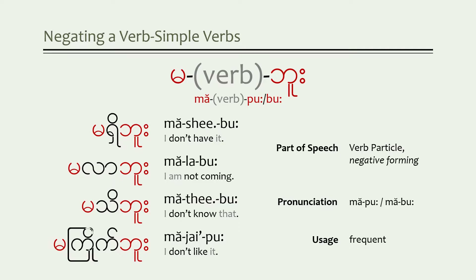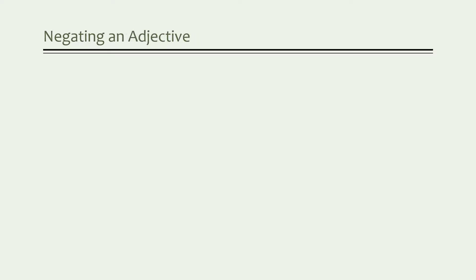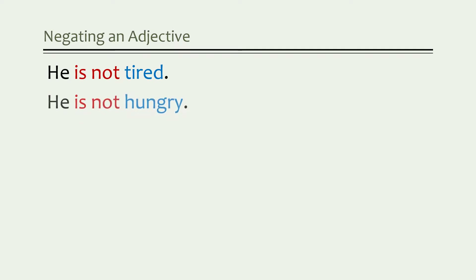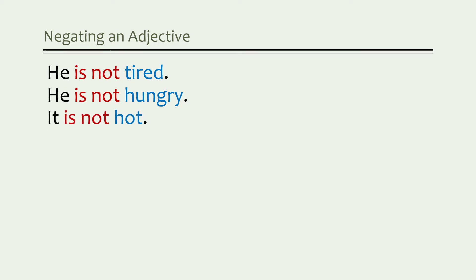Now let's see how this works with adjectives. By way of review, an adjective describes the condition of something or how someone appears or feels — it's a descriptive word. In English, we always use a form of the 'to be' verb when using an adjective. To make the adjective negative, we use a combination of that verb — most often 'is not.' For example: he is not tired, he is not hungry, or it is not hot.